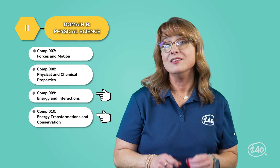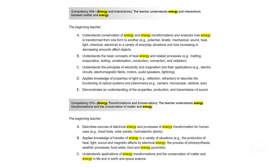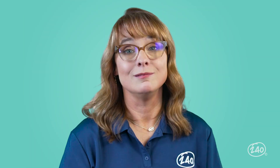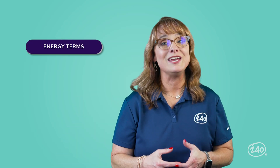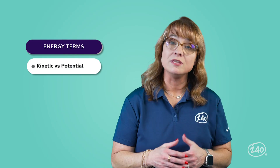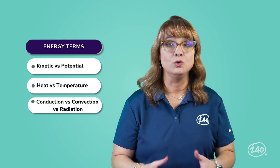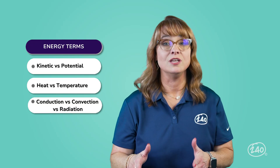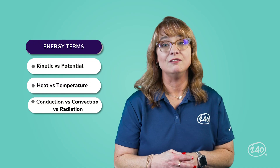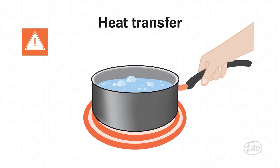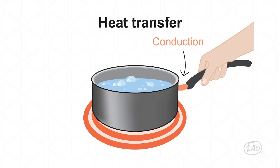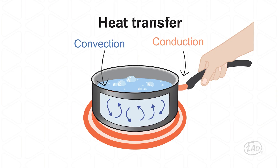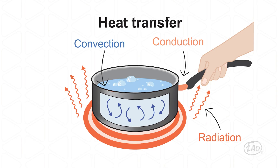Did you notice that energy appears in the title of the last two competencies? Look how many times the word energy appears in the descriptive statements — eleven. Texas is pretty into energy. You'll want to make sure you know the difference between kinetic and potential energy, heat and temperature, and the three movements of energy: conduction, convection, and radiation. Remember, there are three main ways thermal energy is transferred: conduction through a solid or between two materials that are touching, convection by a moving fluid, and radiation by an electromagnetic wave. And that's the key stuff to know in physical science.